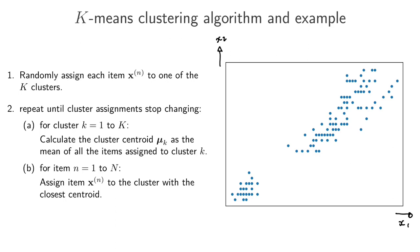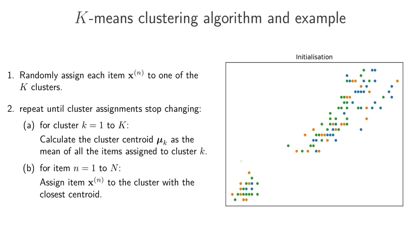Let's step through an example. We should first decide how many clusters we're going to use — for our example let's use three clusters, so k equals 3. In the first step, for each of these points we simply decide whether that point belongs to cluster 1, 2, or 3. The result might look something like this — I've colored the different clusters: cluster one is orange, cluster two is green, and cluster three is blue. We've just randomly assigned each of the xn's to one of the clusters.